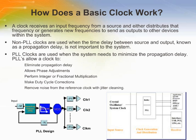PLL clocks are able to eliminate propagation delay, move the output phase with respect to the input phase, make duty cycle corrections, perform integer or fractional multiplication, and remove noise from the reference clock. PLL clocks are used when the system needs to minimize the propagation delay.